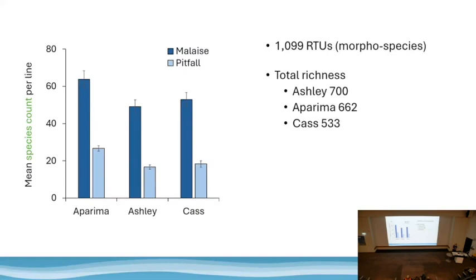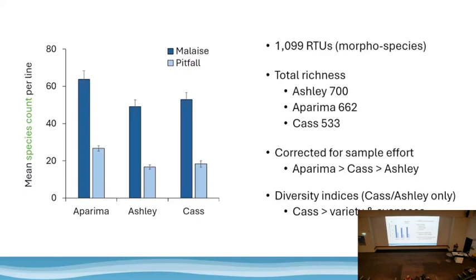In terms of diversity, we found just over 1,000 recognisable taxonomic units — effectively morphospecies, so we'll just call them species — over the whole study. Again, correcting for different sampling effort, the mean count per line shows the Aparima had the highest total per unit search effort, followed by the Cass slightly ahead of the Ashley. Generally speaking, the Cass always had slightly higher biodiversity values and a slightly more even distribution — fewer dominant species — but only slightly compared to the Ashley.